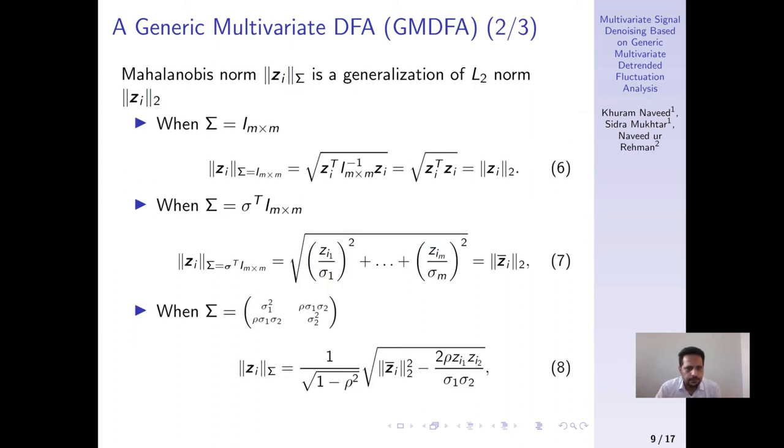The fact that Mahalanobis norm is a generalization of vector norm is further stressed using these three cases where we first consider the covariance matrix as an identity matrix and show that the Mahalanobis norm reduces to Euclidean norm in the first case.